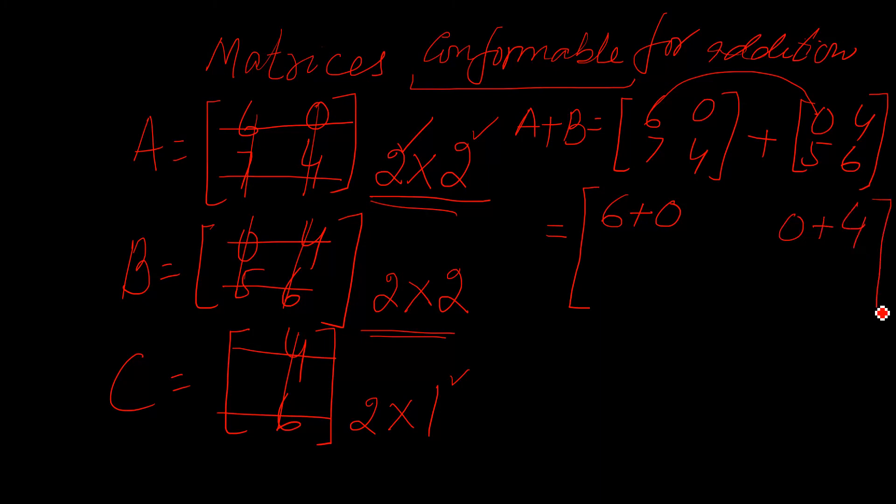So we have to add this together. Similarly first entry with first one, second entry you have to add with the second one. These are called the corresponding entries. And then make a total.